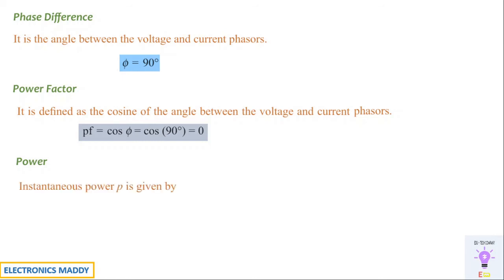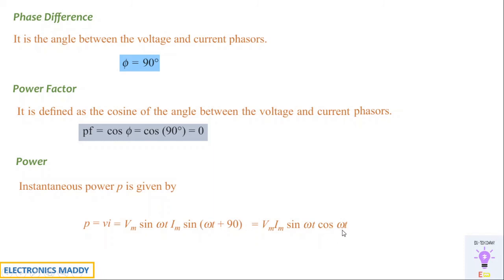From the definition of power, P = v × i. With v = Vm sin(omega t) and i = Im sin(omega t + 90°), placing Vm and Im together and writing sin(omega t + 90°) as cos(omega t) by the ASTC rule, we get P = Vm Im sin(omega t) cos(omega t). Using the identity 2 sin θ cos θ = sin 2θ, this simplifies to P = (Vm Im / 2) sin(2 omega t).